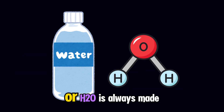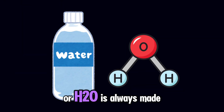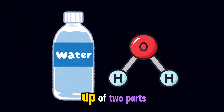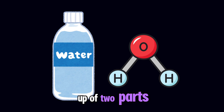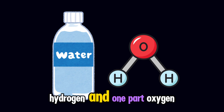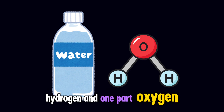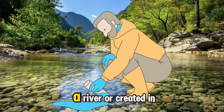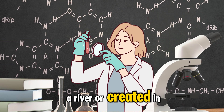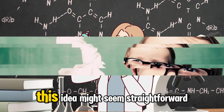For example, water, or H2O, is always made up of two parts hydrogen and one part oxygen by mass, whether it's from a river or created in a lab.